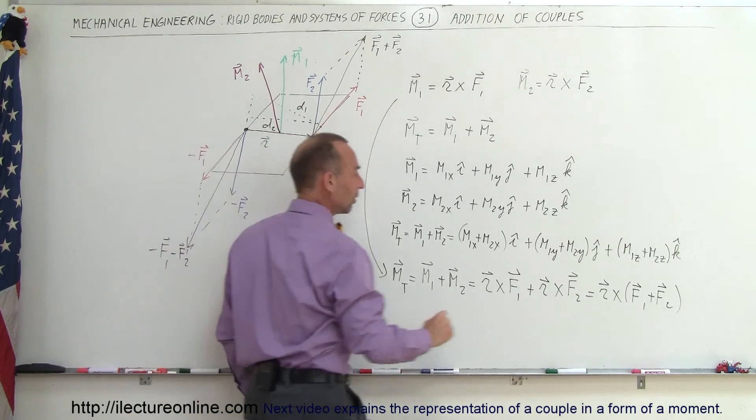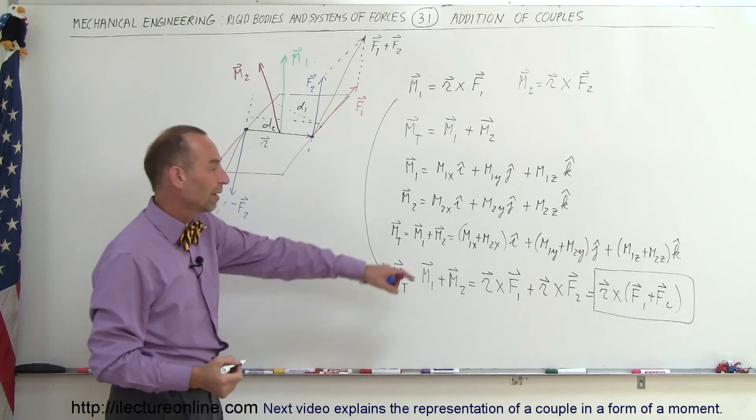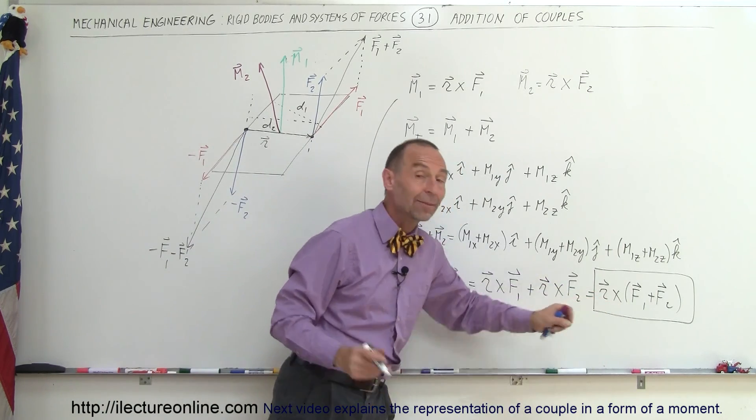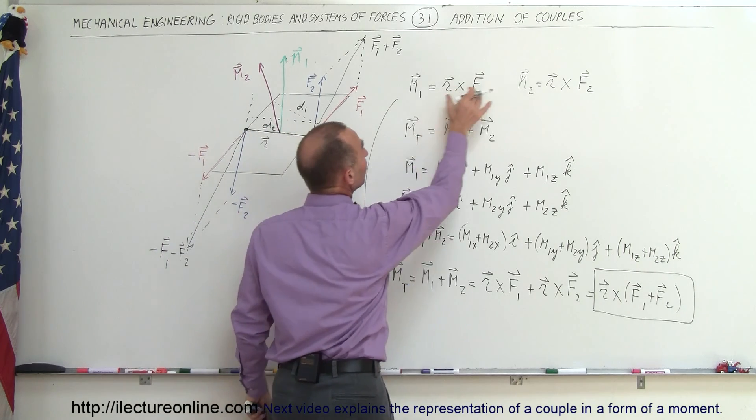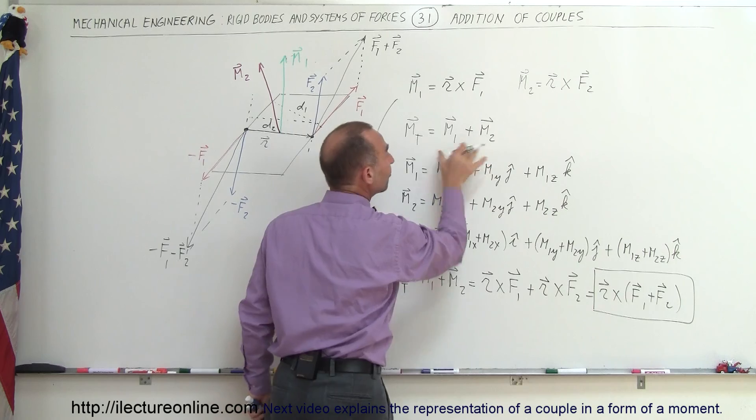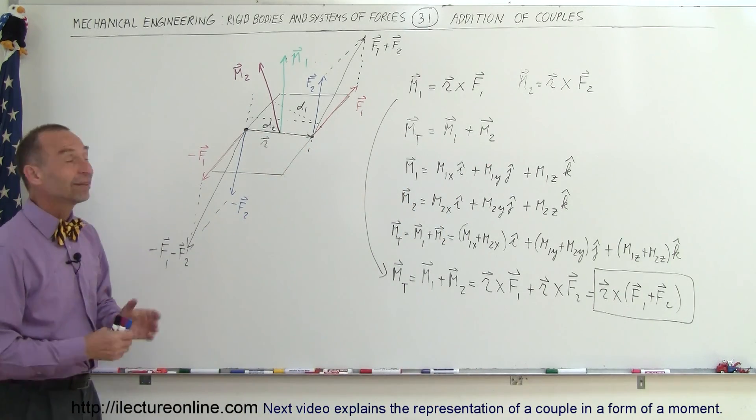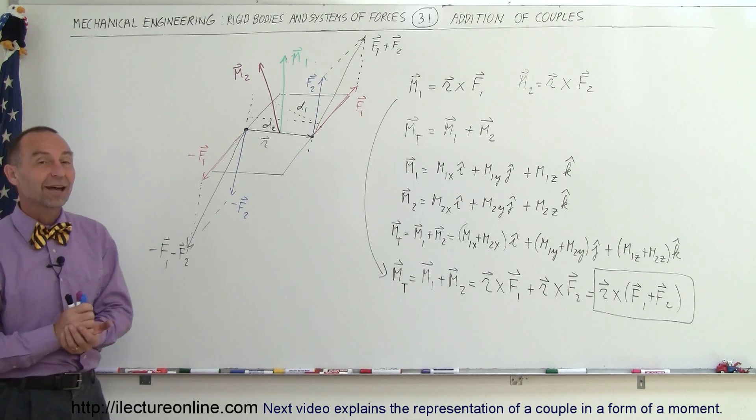So, in other words, we can find the total couple, or the sum of the two couples by simply adding the two vectors together, and then multiplying times the position vector between them, or we can simply calculate the moments independently of each of the two couples, and then simply add them vectorially like that as well. So, either method works. So, that is how we do the addition of couples. So, that's how it's done.